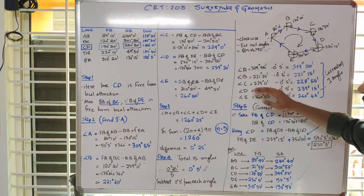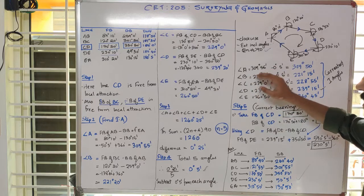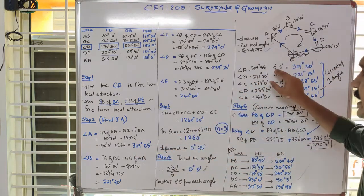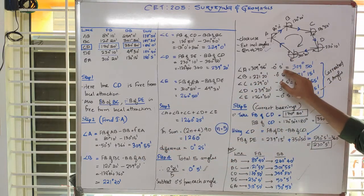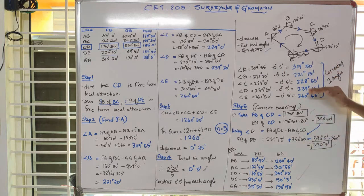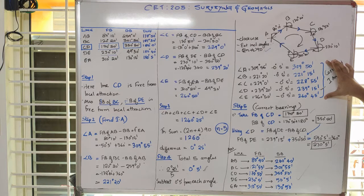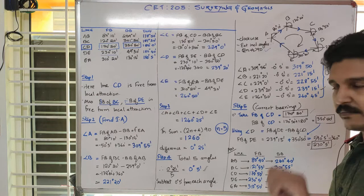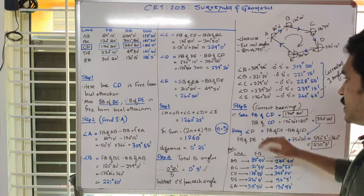That is what I have done here. Each angle — for example, angle A is around 90 degrees 55 minutes minus 5 minutes, that is around 90 degrees 15 minutes. Similarly, we have corrected all the included angles. This is called the corrected included angle. If we get the corrected included angle, we move on to step 5.